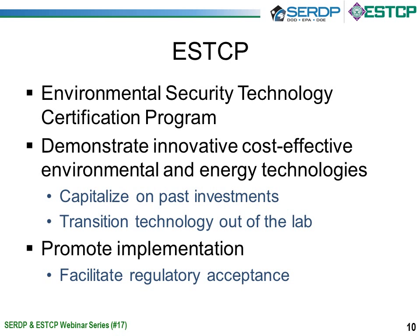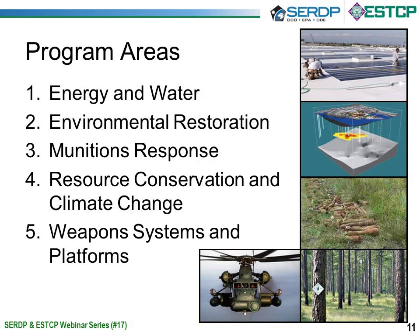SERDP and ESTCP are complementary programs, with much of SERDP research occurring at the lab and pilot scale with occasional field efforts, while ESTCP demonstrations are primarily at the pilot and field scale. There are four program areas in SERDP and five in ESTCP. The energy and water program area is only in ESTCP, while the other four — environmental restoration, munitions response, resource conservation and climate change, and weapons systems and platforms — are SERDP and ESTCP programs managed jointly by a designated program manager.